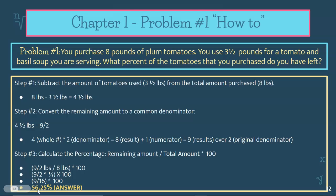So the percent of tomatoes that you purchased that you have left is 56.25%. You're not going to round up — you're going to leave it with this exact decimal as a percent. If you have any questions, reference the steps or ask your teacher for clarification.